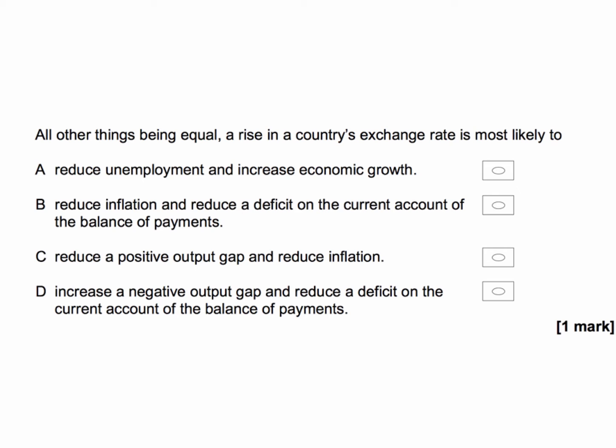A rise in the currency's exchange rate is most likely to... what about A: reduce unemployment and increase growth? A is wrong. A rise in the currency is likely to cause a fall in aggregate demand — for example, a decrease in demand for exports — and therefore lead to higher cyclical unemployment and a slowdown in the growth of the economy. So A is wrong.